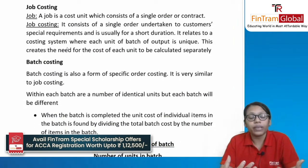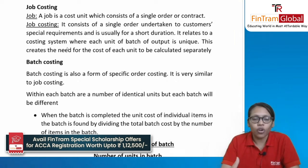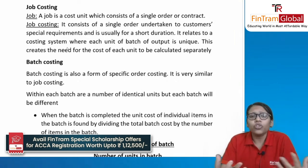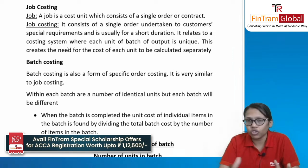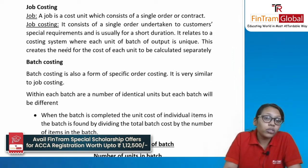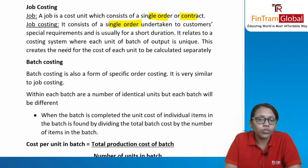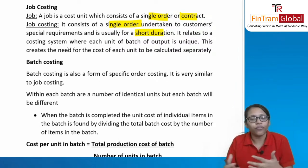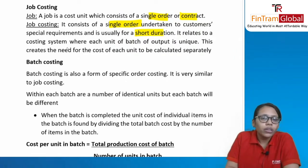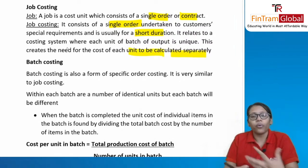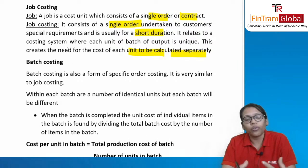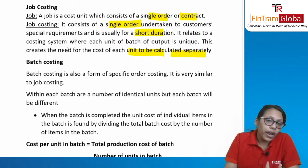Job costing is a specific costing method where cost is calculated for every individual job, because every job is different. It is used in organizations like bakeries where each job is totally different from another. Job costing involves a single order undertaken to a customer's special requirements, usually for a shorter duration. Every unit produced is totally different — goods are produced on customer specifications — so the cost of each unit must be captured separately.